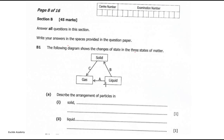We have gas, liquid, and solid. The arrows show the direction of the change of state — from liquid to gas, from liquid to solid, and from solid to gas. These are the three states. The first question asks: describe the arrangement of particles in a solid.